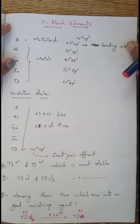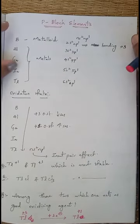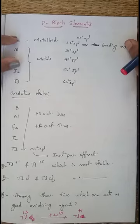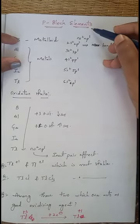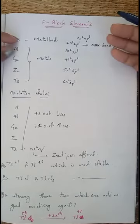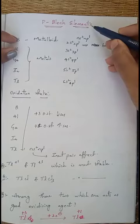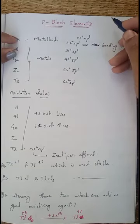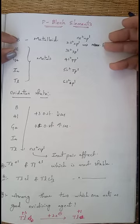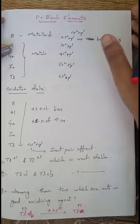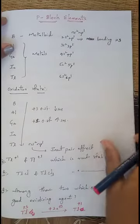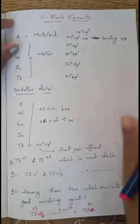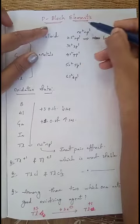Good morning dear students. In this video I am going to explain about the synopsis related to P block elements. P block elements are the elements which belong to the periodic table. The periodic table contains more than 100 elements, so to make it easy they have divided the elements into different blocks like S block, P block, D block, and F block. Now we are going to discuss about P block elements.